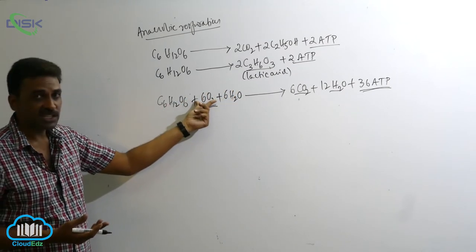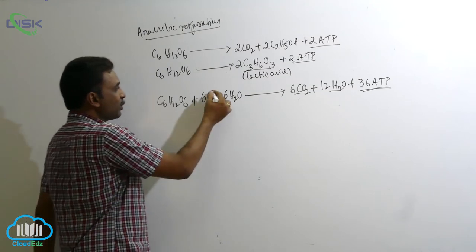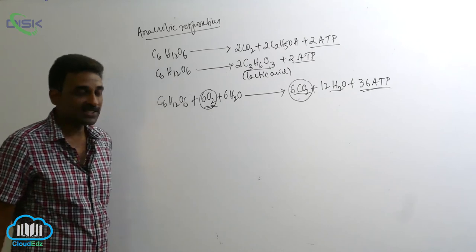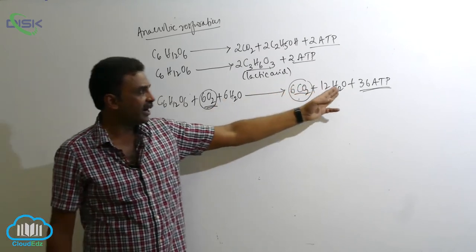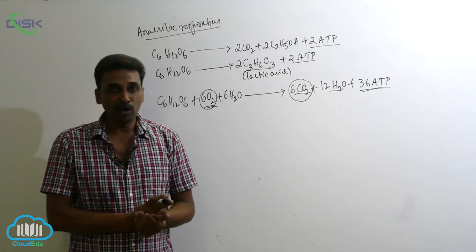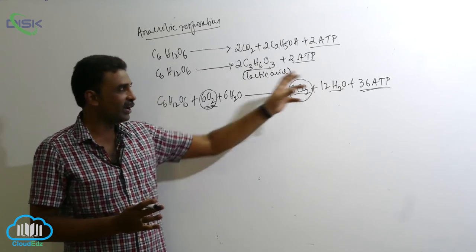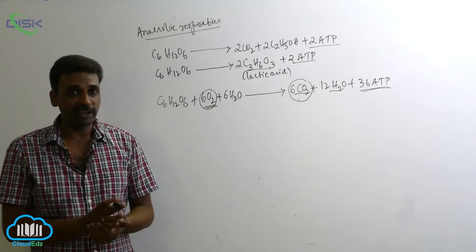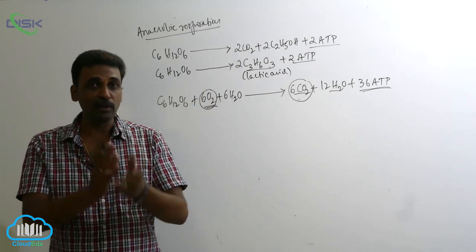So here you can see there is utilization of oxygen, and in the process carbon dioxide is released. Some water might increase and 36 ATP molecules are synthesized. Good enough amount of energy is released. That is the maximum amount of energy released from that molecule of glucose.